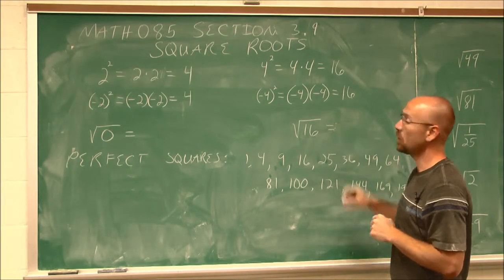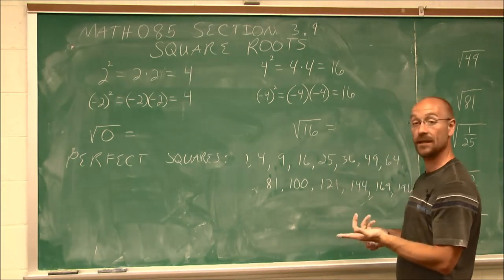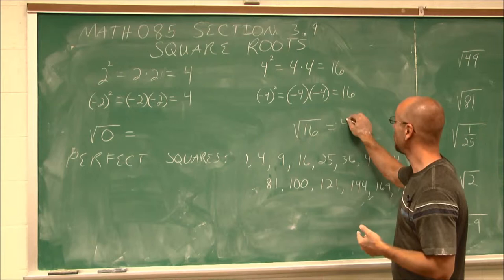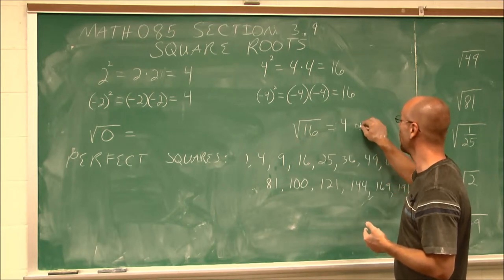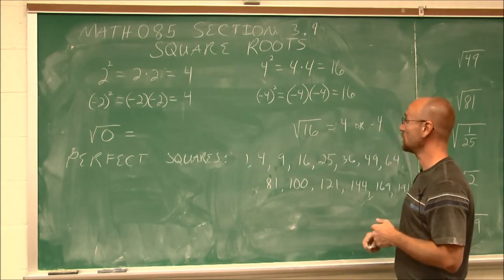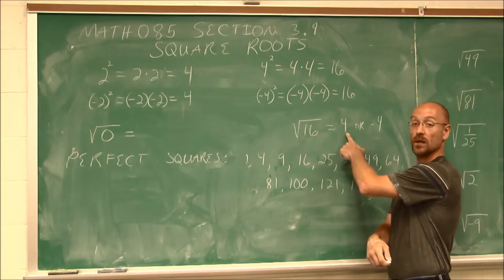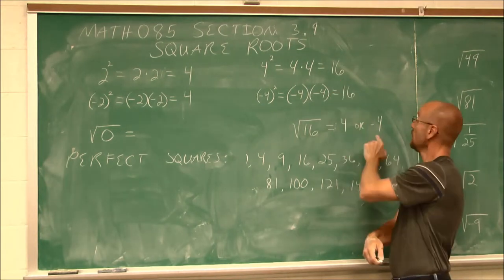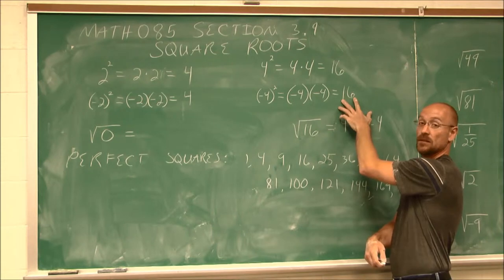Well, there's two possibilities. There's 4 and there's negative 4. So there's positive 4 or negative 4. Because what is 4 squared? 16. What is negative 4 squared? Still 16.